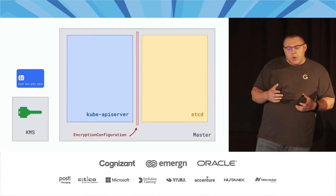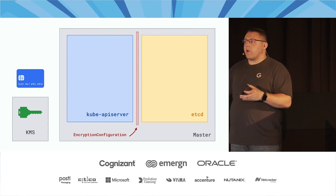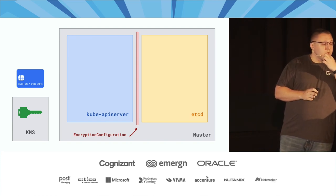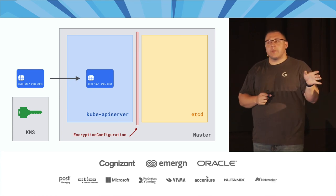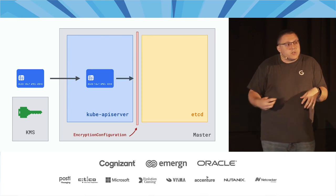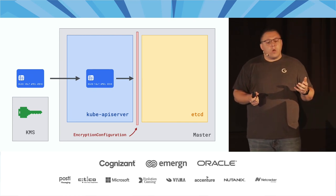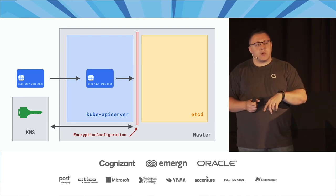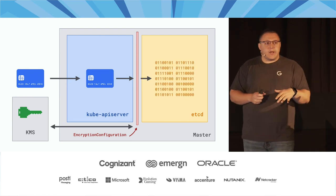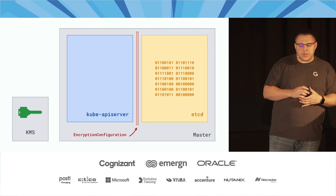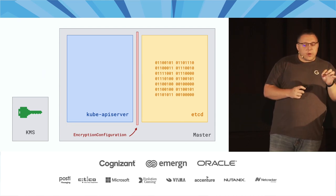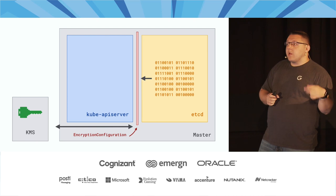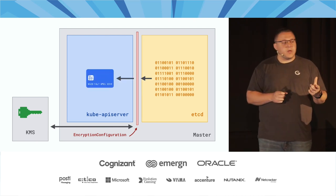Graphically, we introduce a KMS provider that provides the key encryption keys. A piece of data hits the Kubernetes API server, which delegates to the encryption configuration. But the encryption configuration has no keys, so it delegates encryption to the third-party KMS provider. The KMS provider returns the encrypted data, which is written to etcd. When we reverse the process, the encrypted data goes to the encryption configuration, which sends it to KMS for decryption. The KMS decrypts the data, gives back the plain text, which is returned to the user.